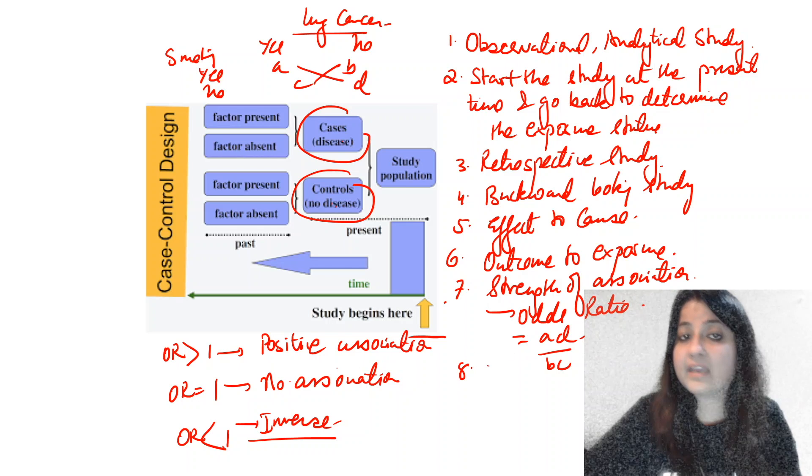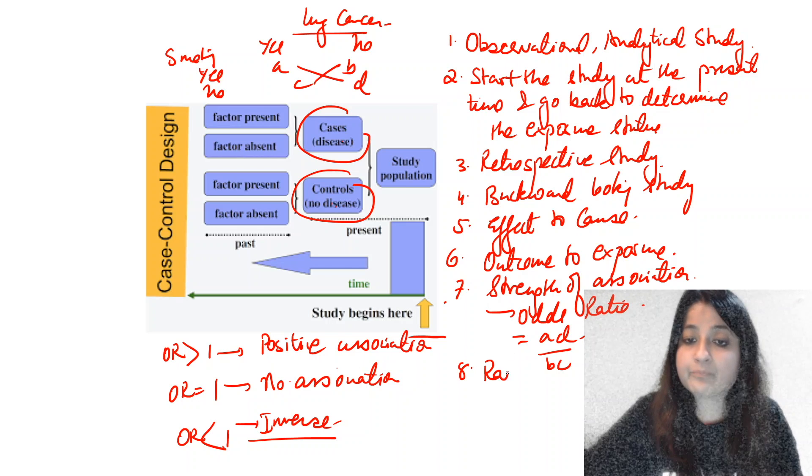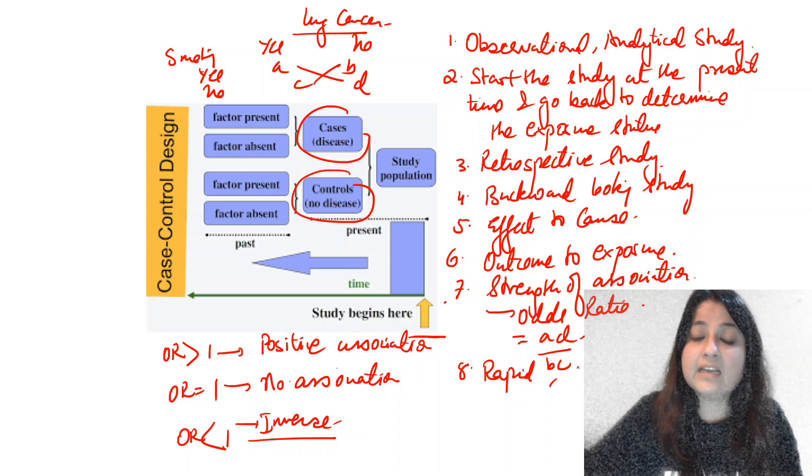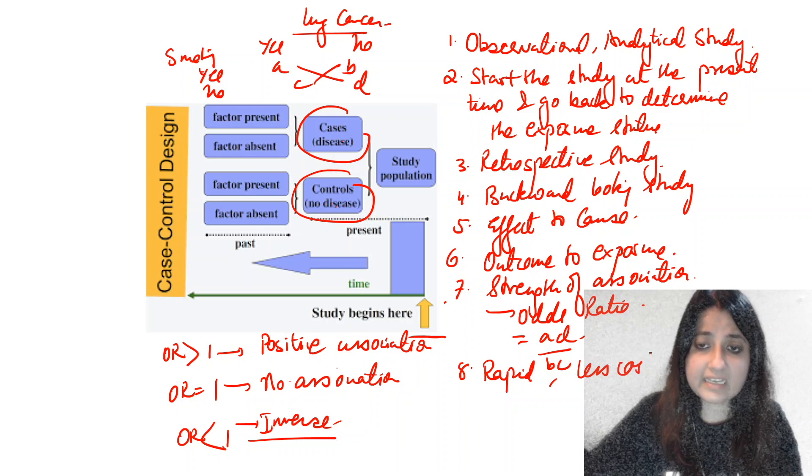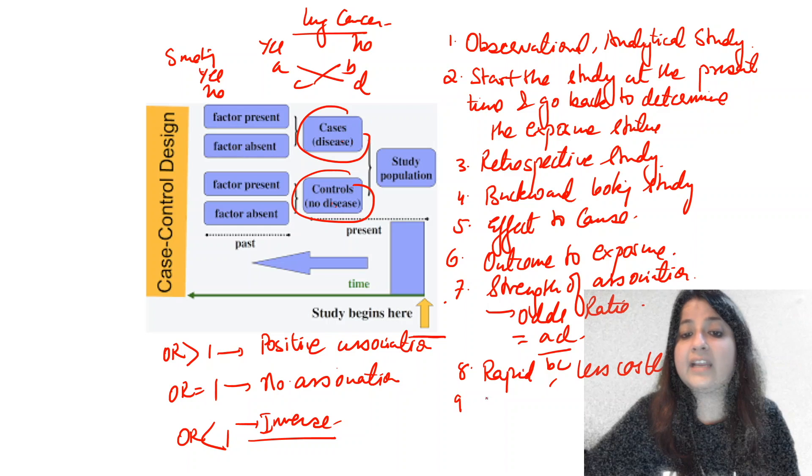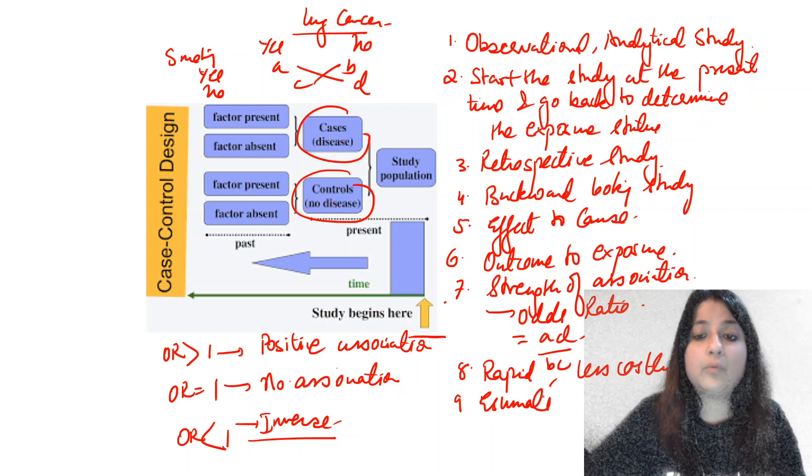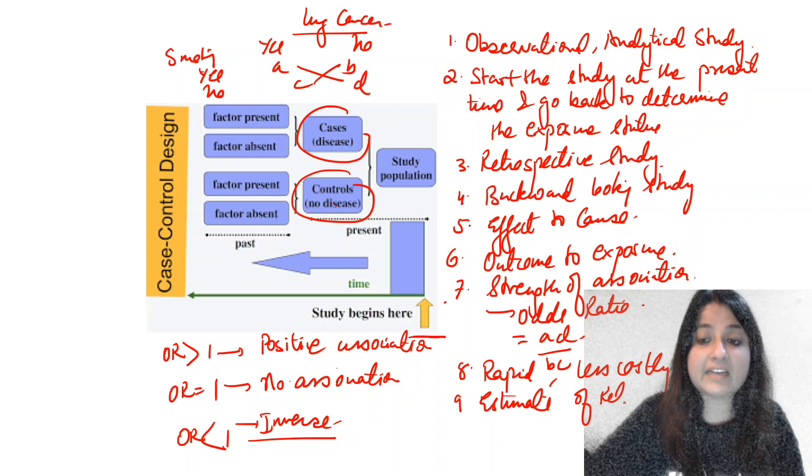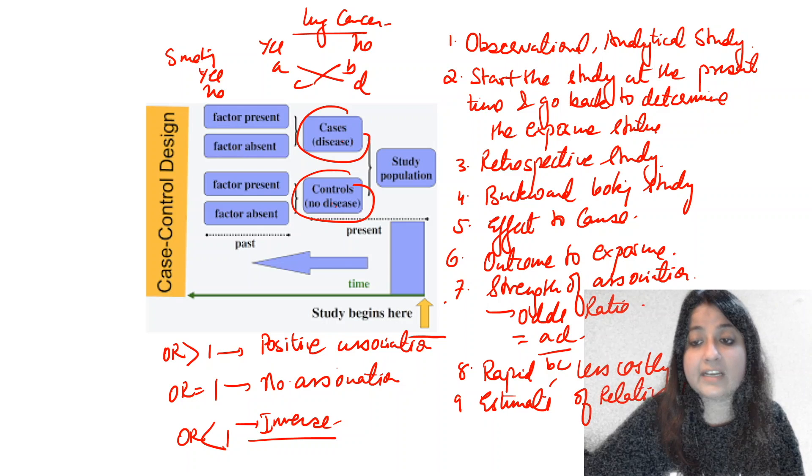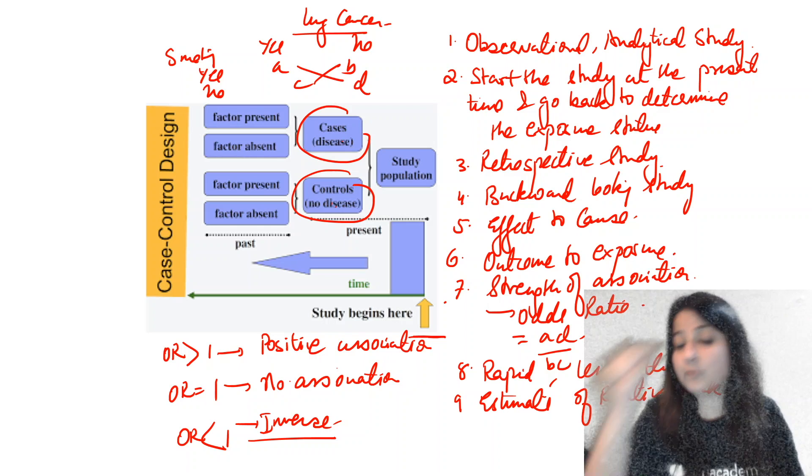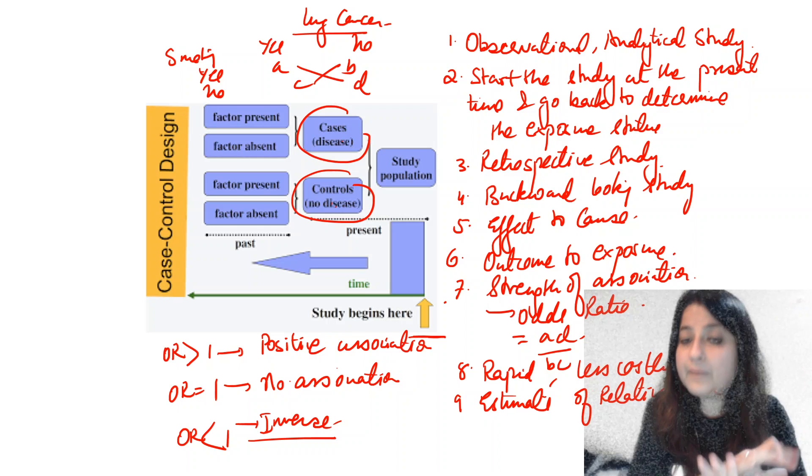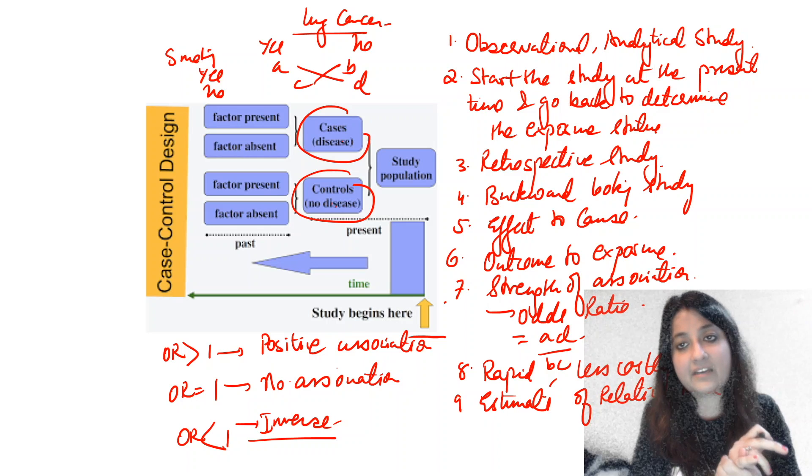These are measures of strength of association in case control. Most important thing, case control is rapid, less costly, but it cannot calculate incidence. It can only provide us with an estimate of relative risk. Relative risk is calculated in a cohort study. This only gives us an estimate but cannot calculate incidence. That is very important.